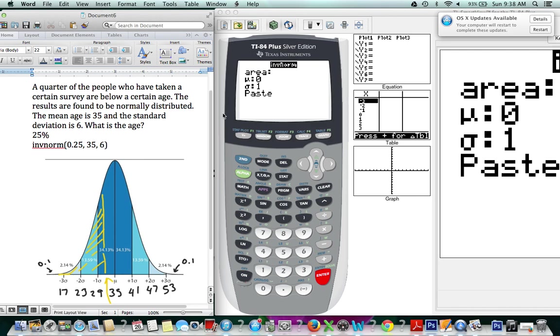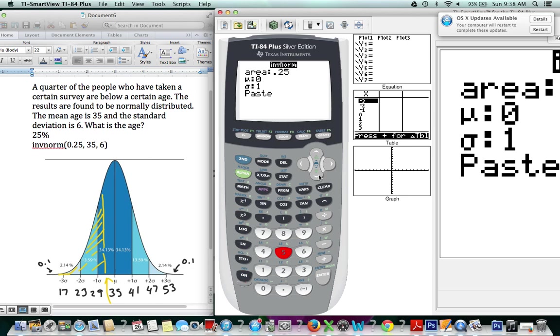So, the numbers entered here are the area, which is 0.25, the mean, again, which is 35, and the standard deviation, which is 6.